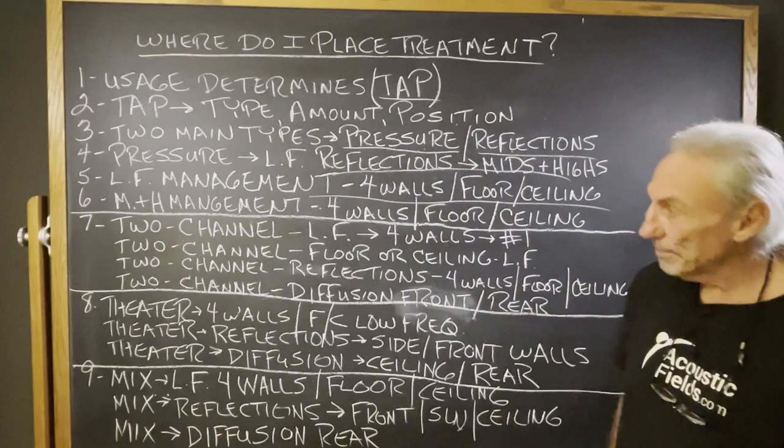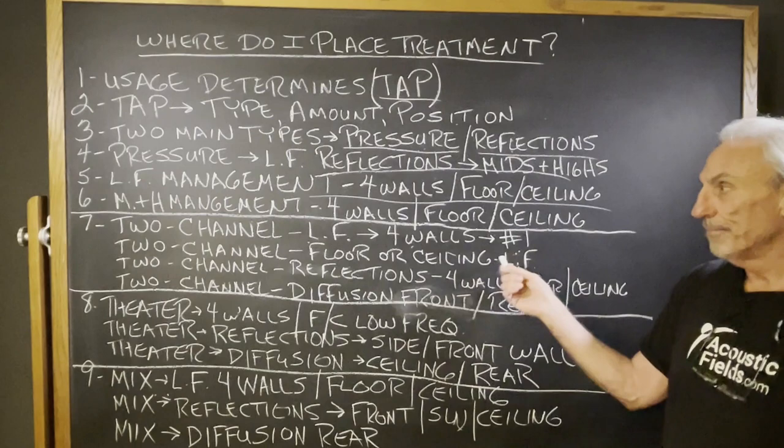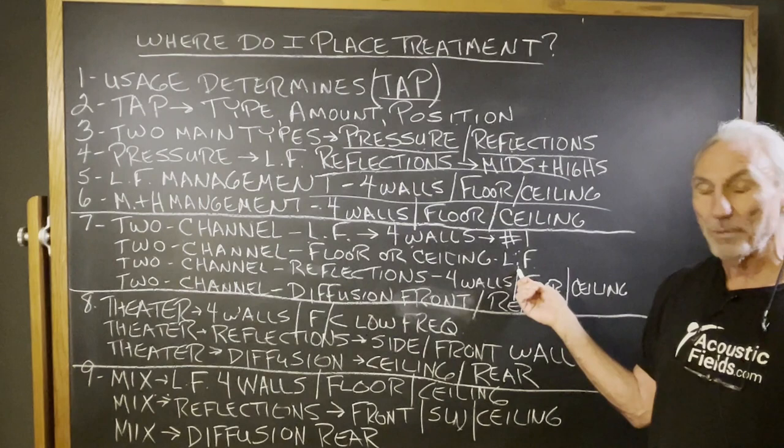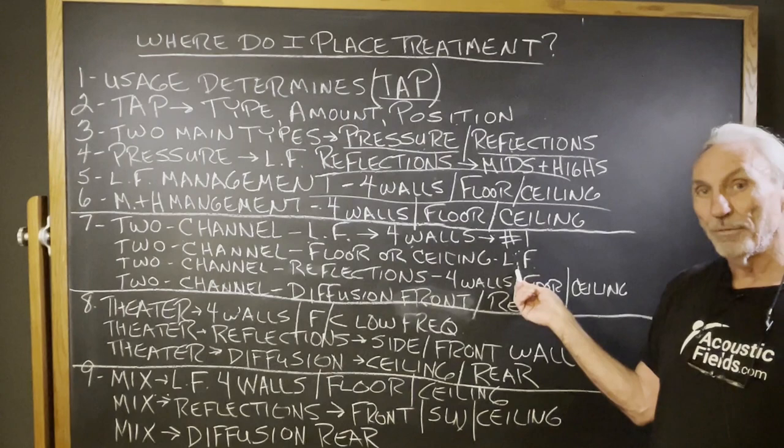Let's look at some usages. We have two-channel theater and mix. For two-channel, low frequency treatment on the four walls — you've got to do that, number one. Two-channel floor or ceiling pressure for low frequency could be a phase two. Most people don't want to do this because it involves treating the ceiling or the floor. Floor is easy with a platform; ceiling is much more difficult, especially with the weight of low frequency absorption.